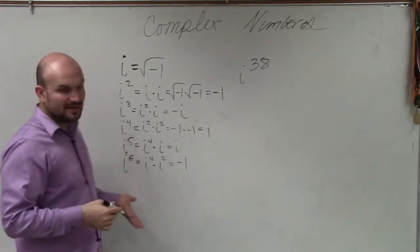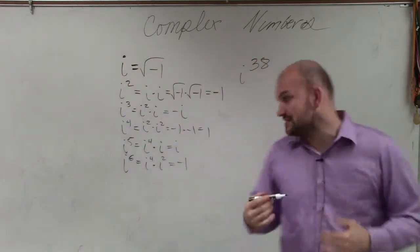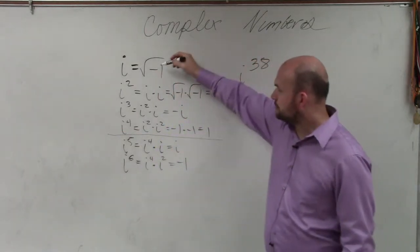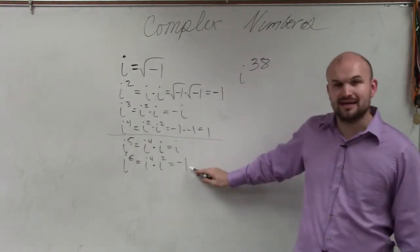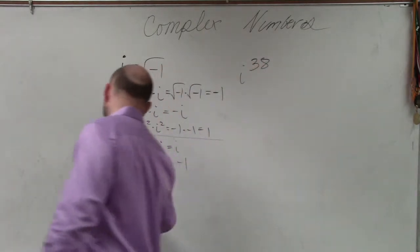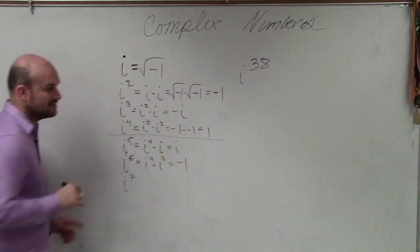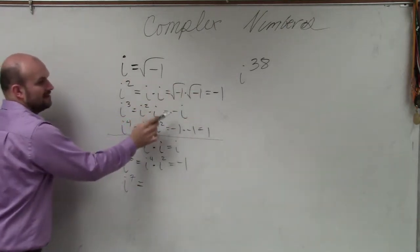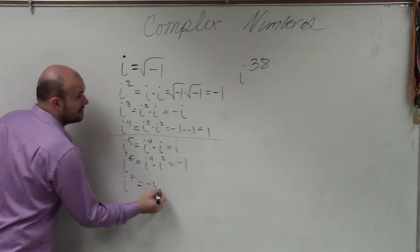So before I start going to i to the 7th, what I start to notice is after i to the 4th, it starts to repeat itself. It goes back to i and goes back to negative 1. So therefore, if I was going to ask you guys, what is i to the 7th, you could justify that i to the 7th would be negative i.